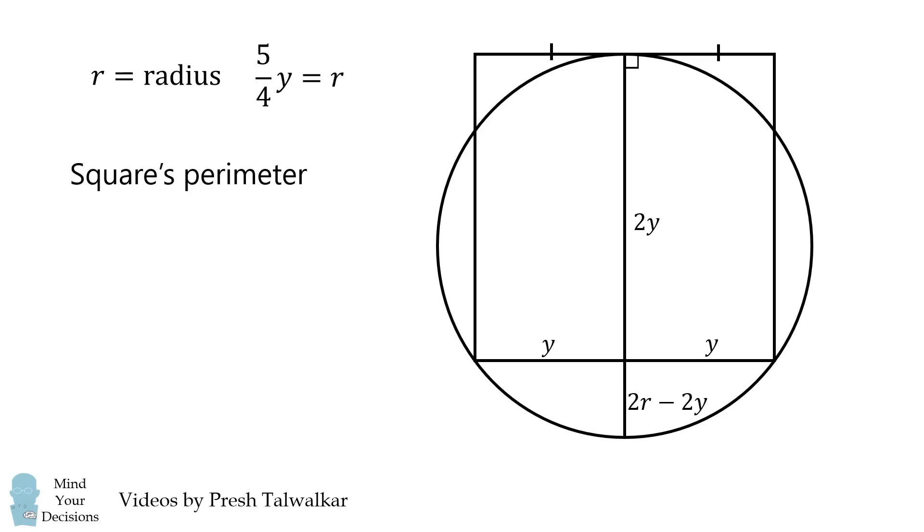Let's now calculate the square's perimeter. A side of the square is equal to 2y, which means the perimeter is equal to 4 multiplied by 2y, which is equal to 8y. Now let's calculate the circle's perimeter, or its circumference. That'll be equal to 2πr. Now r is equal to 5 over 4 multiplied by y, which means 2πr is equal to 5π over 2 multiplied by y. And this is approximately equal to 7.85y, which is definitely less than 8y. Therefore, the square has the larger perimeter.